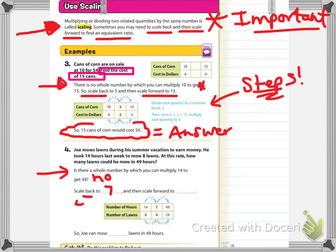Sometimes by scaling, you may need to scale back, which means you are dividing, getting a smaller number. And then you need to scale forward to find an equivalent ratio. Scaling forward would be multiplying to get the larger number. If you look at example three, cans of corn are on sale at 10 cans for $4, find what the cost would be if you bought 15 cans. I can't go from 10 to 15. There's no whole number that I can multiply 10 by to get 15. So if you look at the ratio table on the bottom, you see that they are scaling back. 10 divided by 2 is 5. And 5, if I multiply by 3, will get me 15. So 15 cans of corn would cost $6.